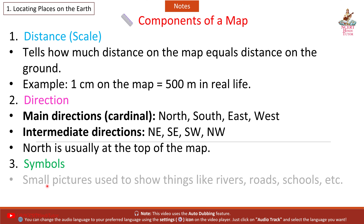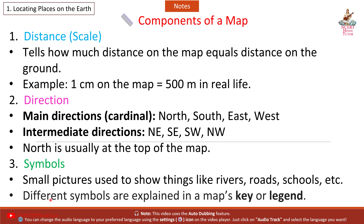Third, Symbols: small pictures used to show things like rivers, roads, schools, etc. Different symbols are explained in a map key or legend.